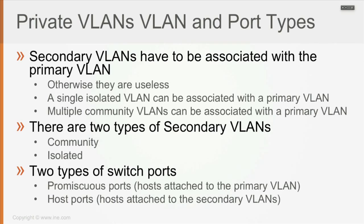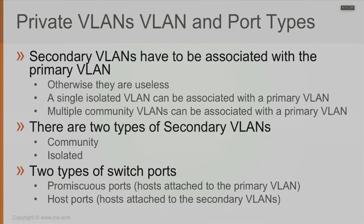To summarize: define what is the primary and what are the secondary VLANs, associate the secondary with the primary VLAN, then go to the switch port level and configure physical ports to be either promiscuous or host ports. If it's a host port, you also have to configure which secondary VLAN that specific port belongs to — a community VLAN or an isolated VLAN.